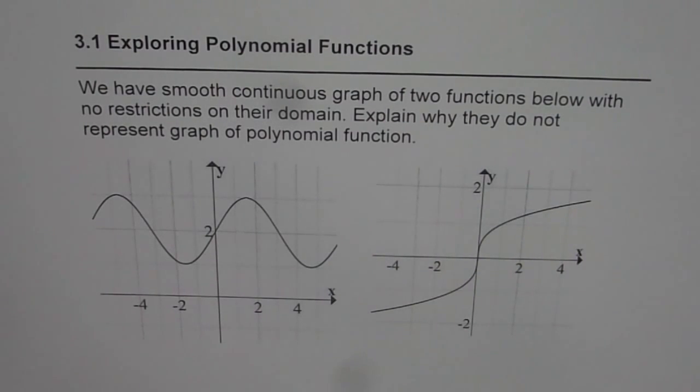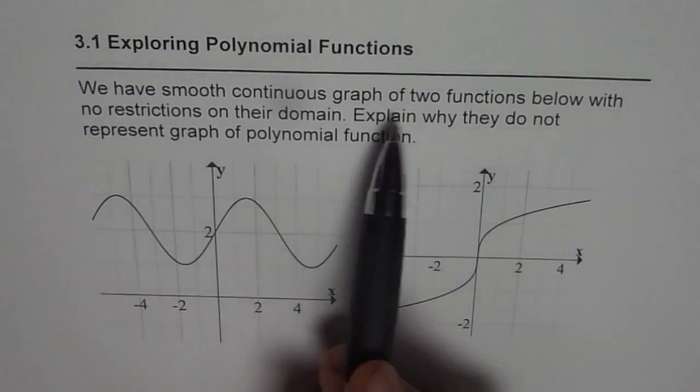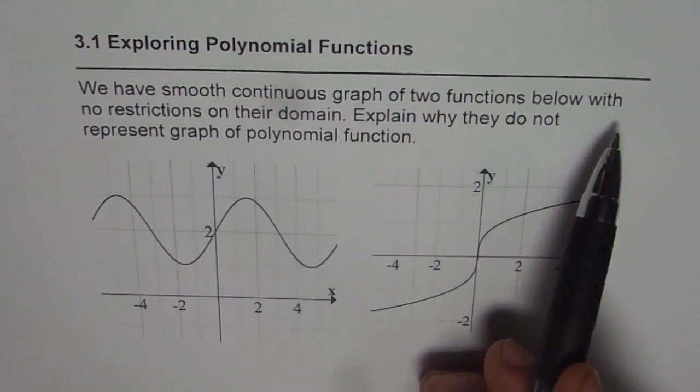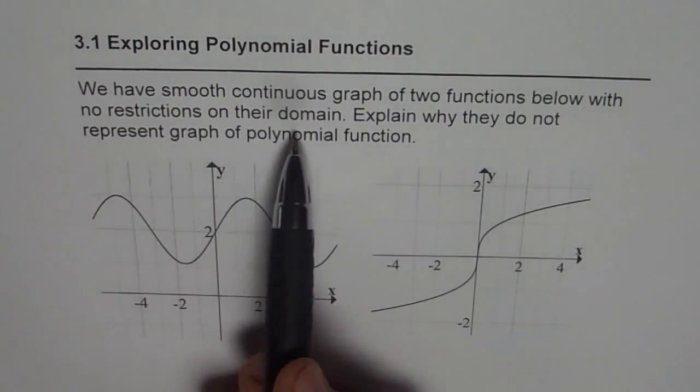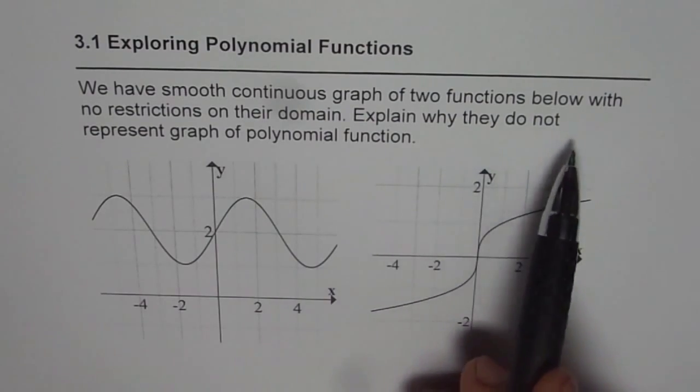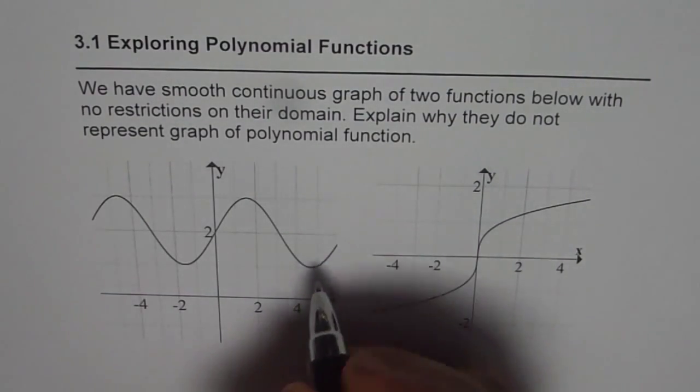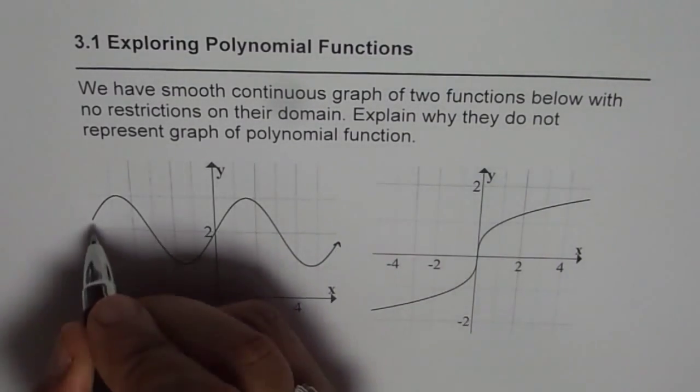Related to that, we have a question here. The question is, we have smooth continuous graph of two functions below with no restrictions on their domain. Explain why they do not represent graph of polynomial functions. So these are not polynomial functions.